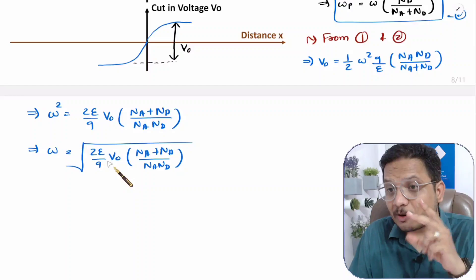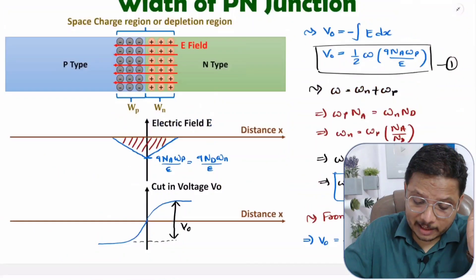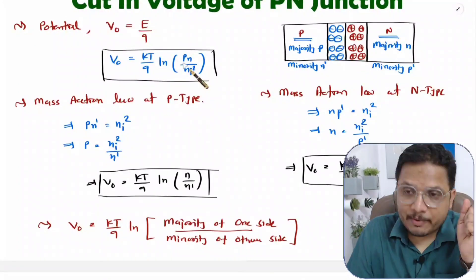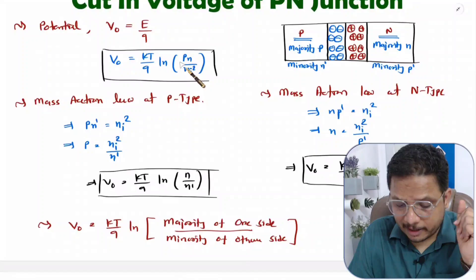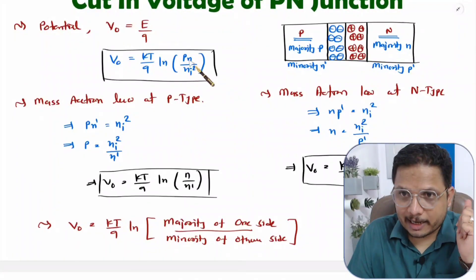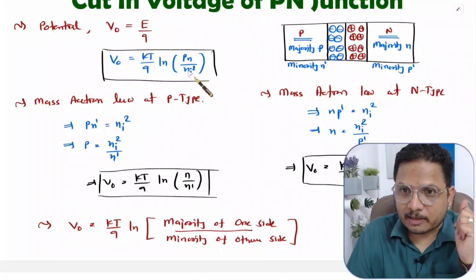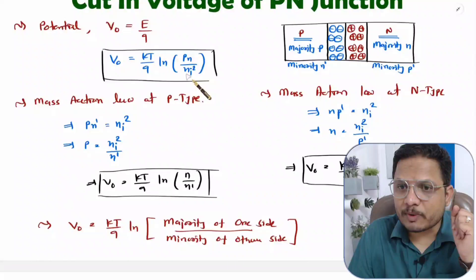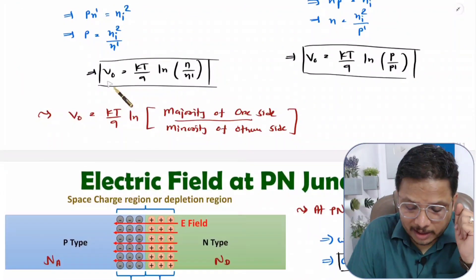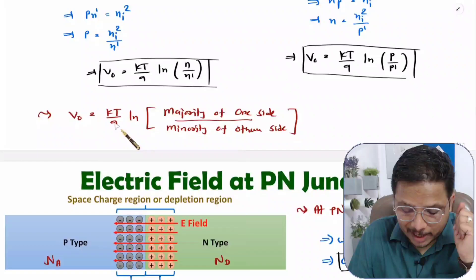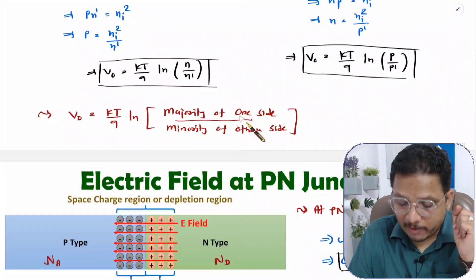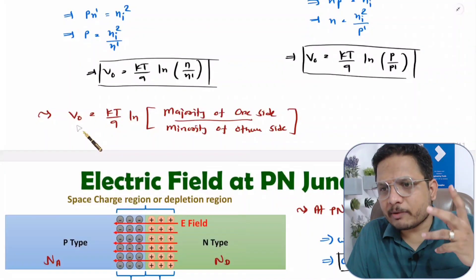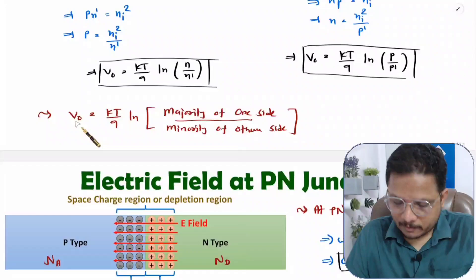You might be wondering how to calculate V0. I have already explained this in an earlier video. V0 can be calculated by multiple ways: if you have donor and acceptor impurity concentrations, V0 = (kT/q)·ln(Na·Nd / ni²). Alternatively, V0 = (kT/q)·ln(majority carrier of one side / minority carrier of the other side).